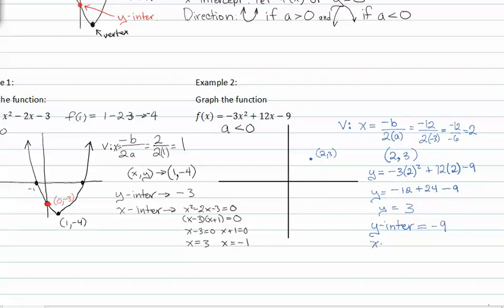And my x-intercepts, which is -3x² + 12x - 9 equals zero. And I need to factor that. It factors to (x - 3)(x - 1).